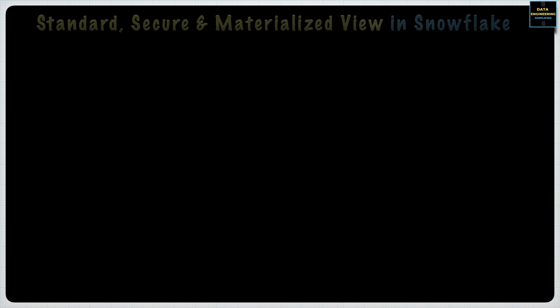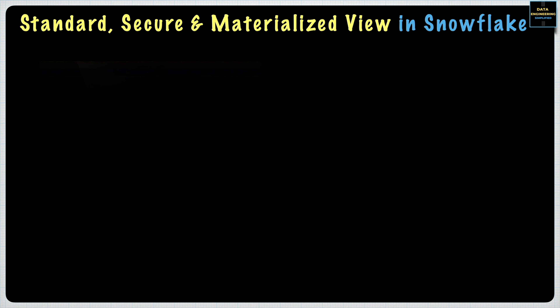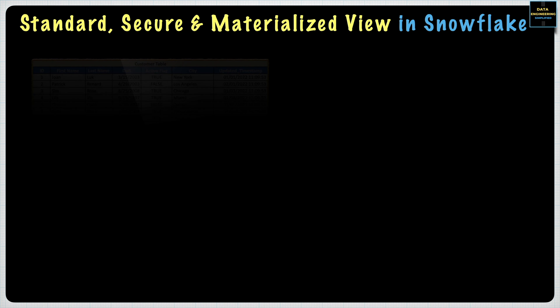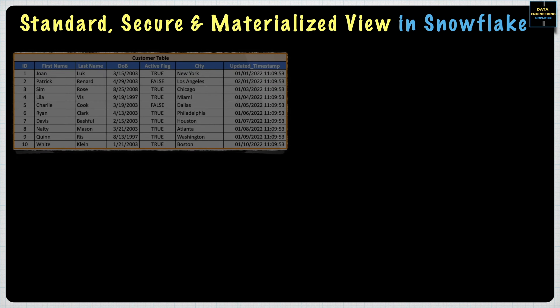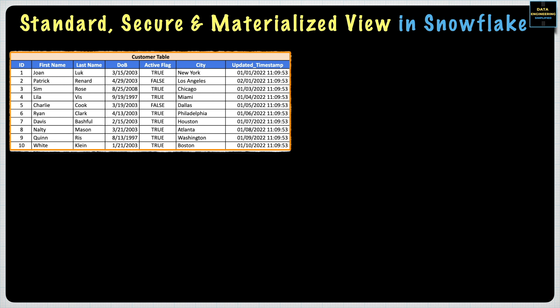Views, whether standard or materialized, are a very common concept in the database or data warehouse world. The main beauty of a view is that it can be used like a table in most situations, but unlike a table, it can encapsulate very complex calculations and commonly used joins for your business case. It can also use pretty much any object in your database except for stored procedures. So there are many reasons we want to use views.